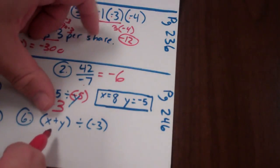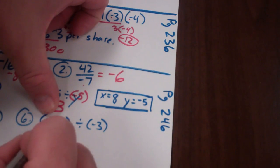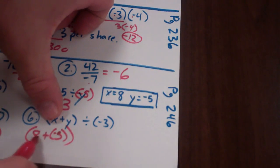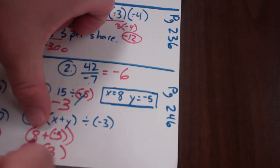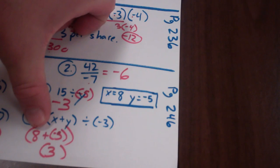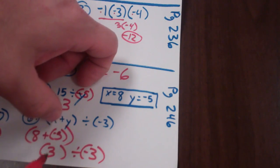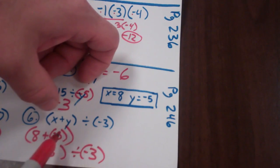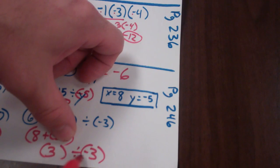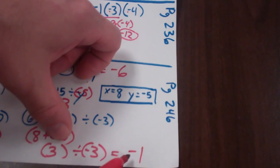Problem six: x plus y divided by negative three, where x is eight and y is negative five. Be careful — this is a different rule. Eight plus negative five uses addition rules: different signs, so I subtract and take the sign of the larger absolute value, which gives positive three. Now I have three divided by negative three. Now that I'm in all division, I can say one negative — one is odd — so the answer is negative. Or different signs always negative.